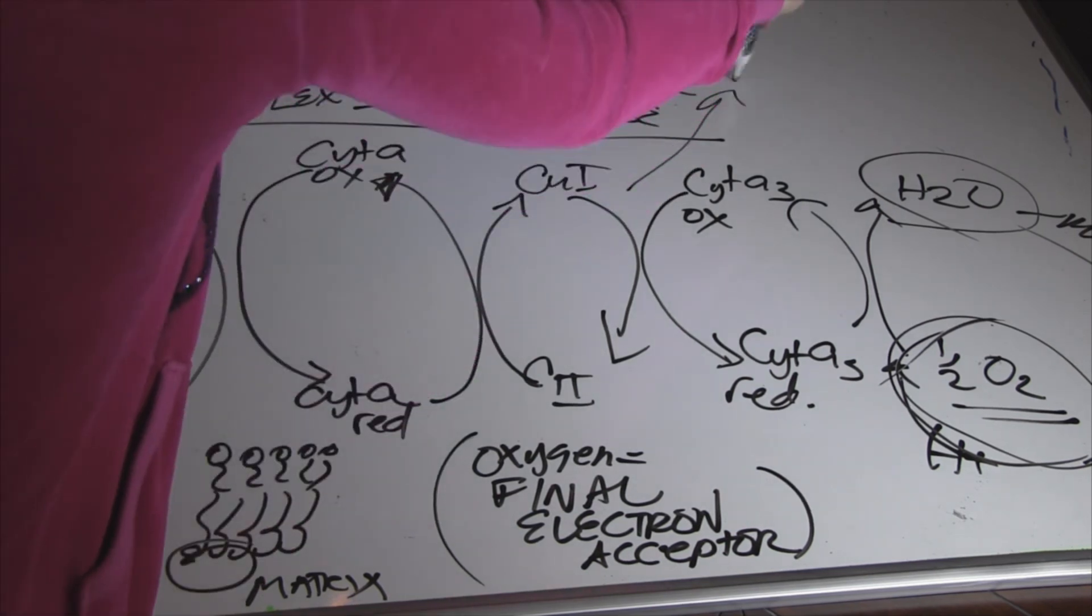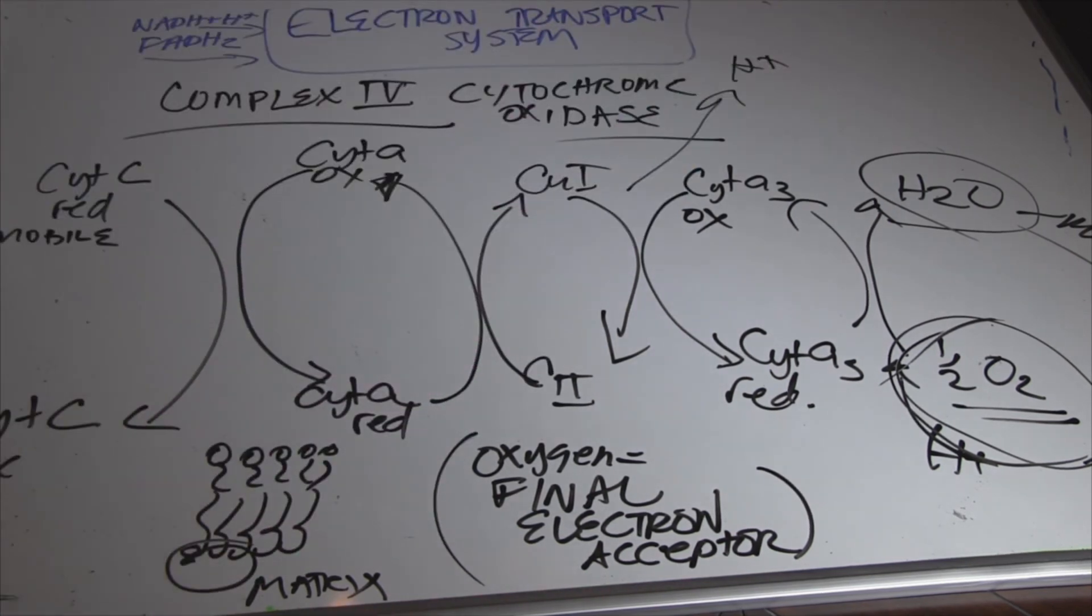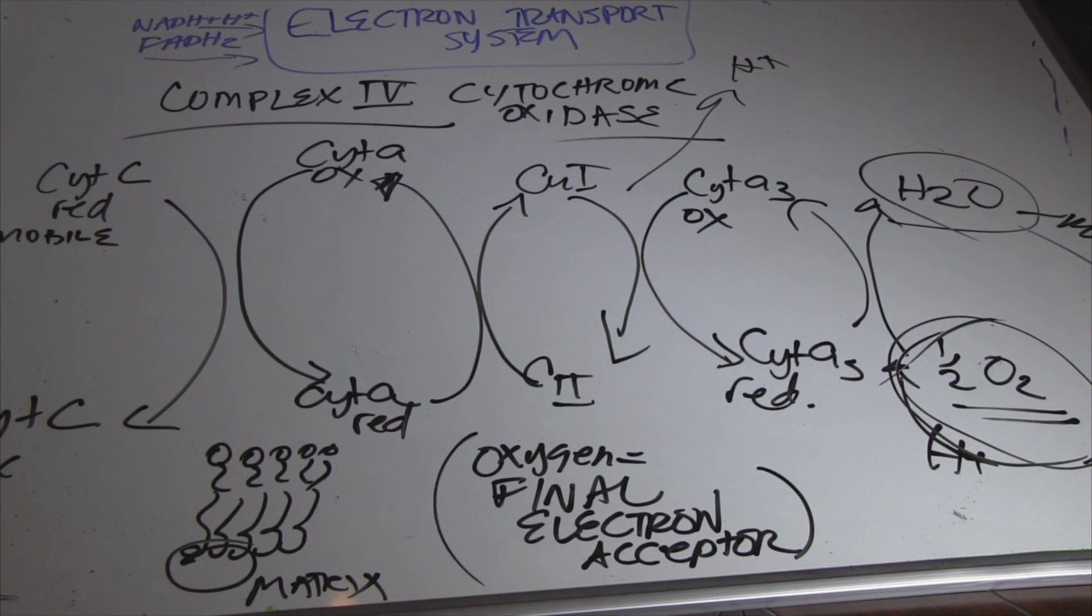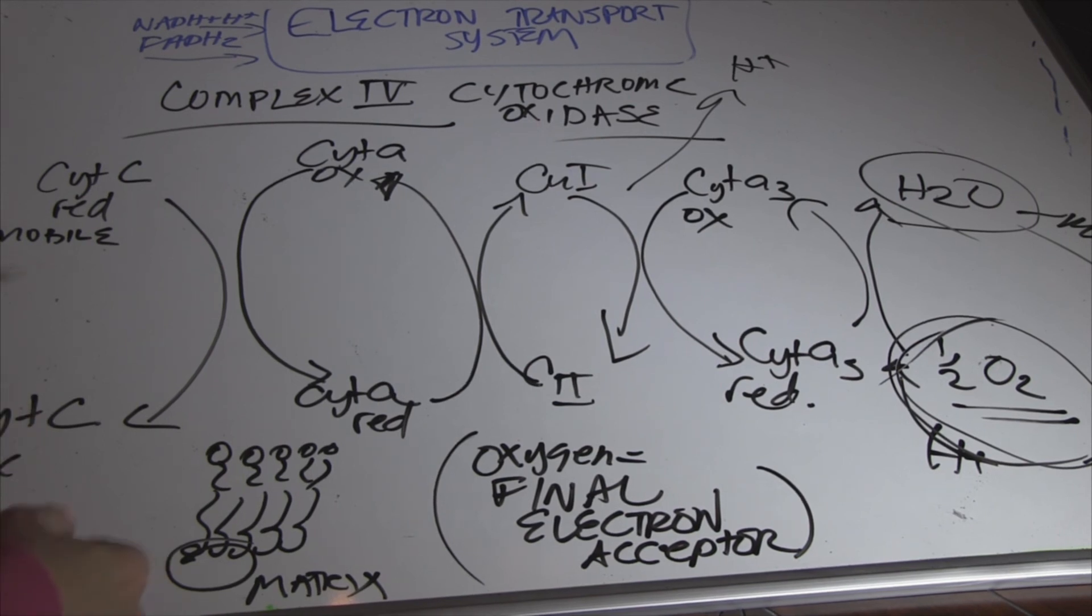So that is the completion of our electron transport chain. Here, this was a proton pump setting up that electrochemical gradient for the next set of reactions. They're actually phosphorylations. This is a coupled system. We have the electron transport system, and then the next one, which is chemiosmosis, which we will discuss now.